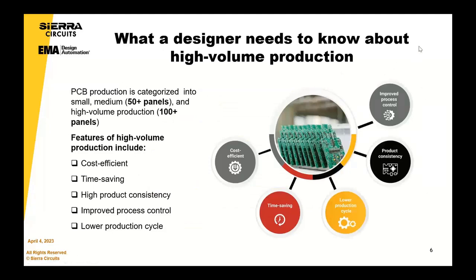What does a designer need to know about high volume production? Within the circuit board industry, we have different types of manufacturing, and small, medium, large volume means something different to different people. Within our organisation, we class small volume as sub-50 panels — a production panel being typically 18 by 24 inches in area. Anything between 50 and 100 panels we class as medium, and anything above 100 panels we class as high production.